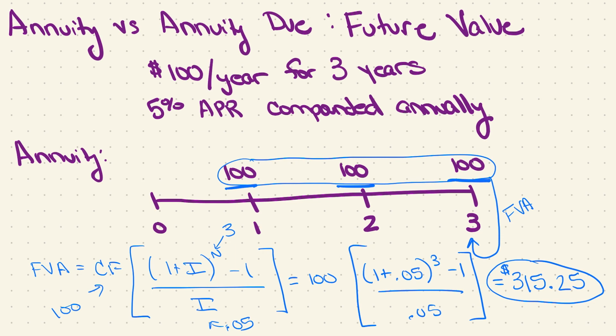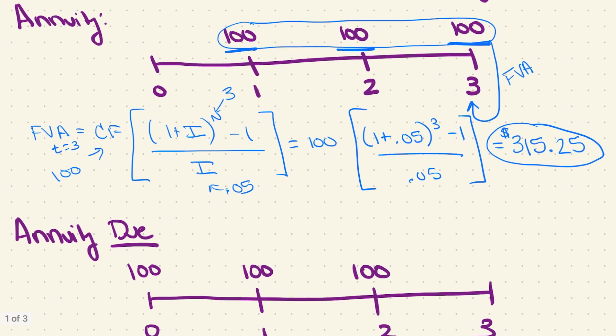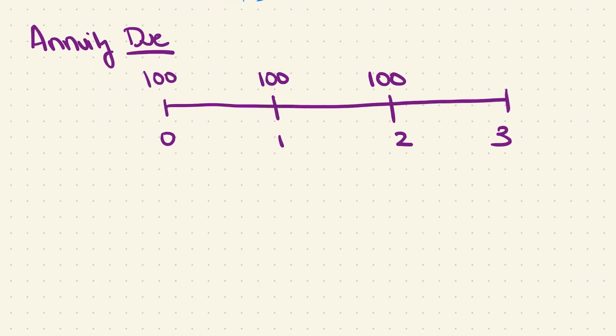Now again, just to emphasize that timing, this is telling me the future value annuity at t equals three. Now if I switch my annuity to instead of each cash flow happening at the end of each period, it becomes an annuity due, where each cash flow occurs at the beginning of the period. This is what my new timeline would look like. So I still have three cash flows, just now each one is at the beginning of each period.